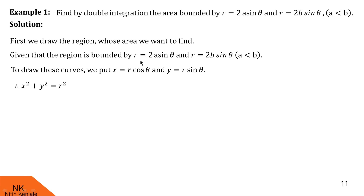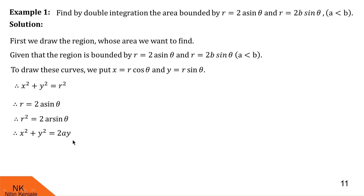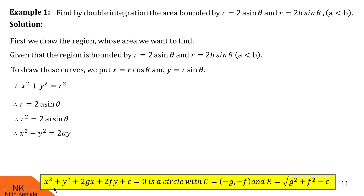Consider the equation r = 2a sinθ. Multiplying both sides by r, we get r² = 2ar sinθ. Since r² = x² + y² and r sinθ = y, this becomes x² + y² = 2ay. This is an equation of a circle of the type x² + y² + 2gx + 2fy + c = 0, whose center is (−g, −f) and radius is √(g² + f² − c). Comparing, we get center (0, a) and radius a.